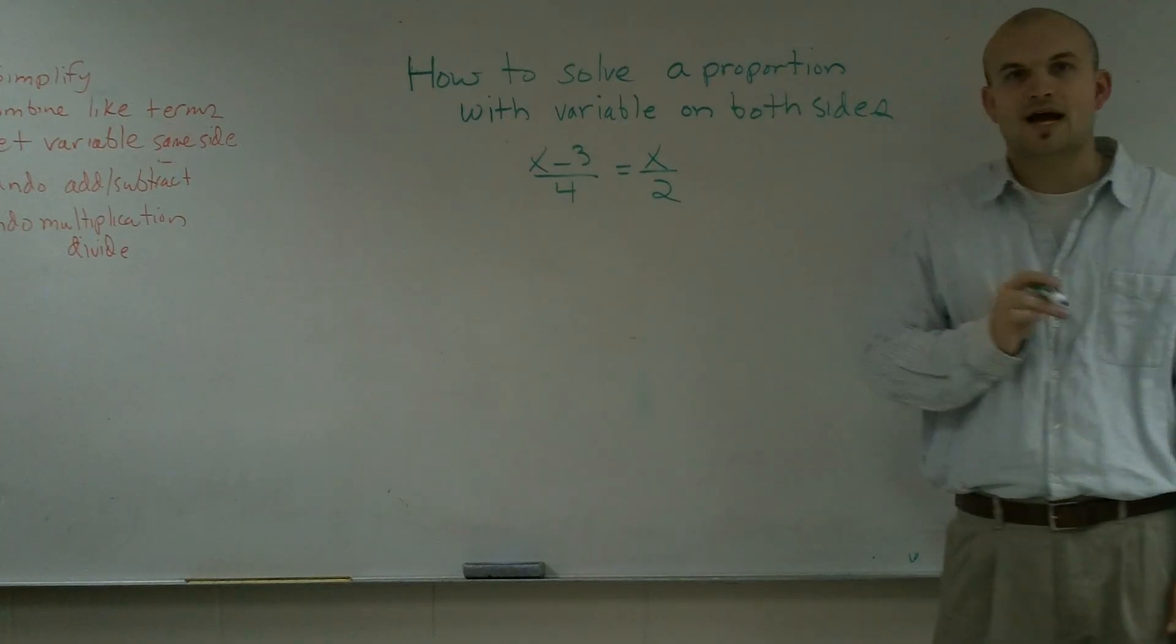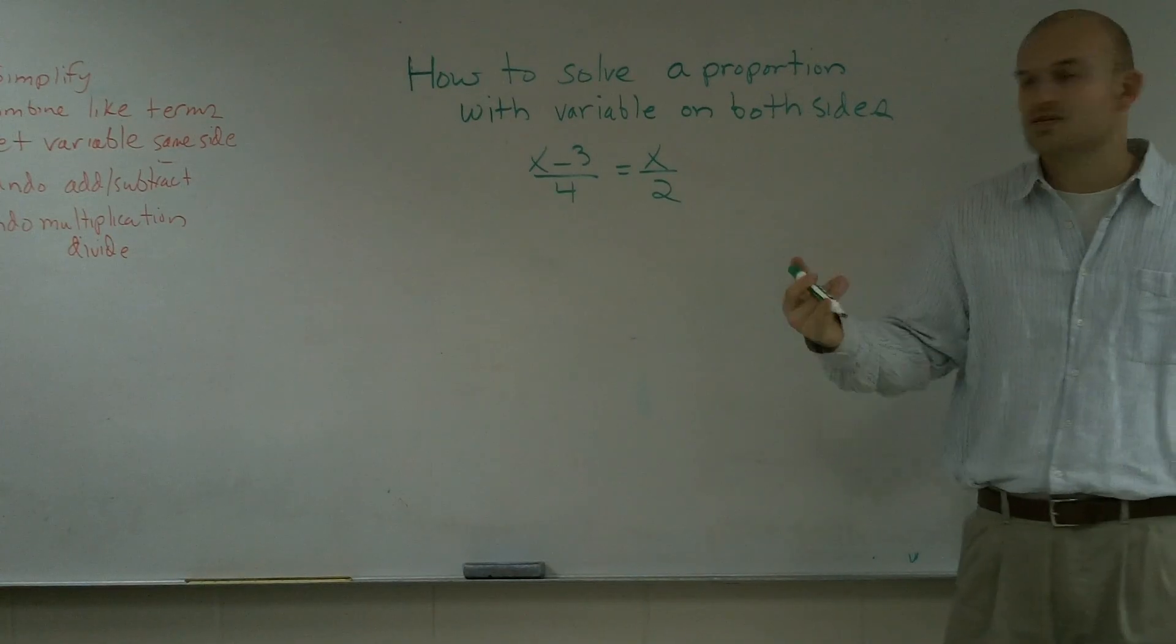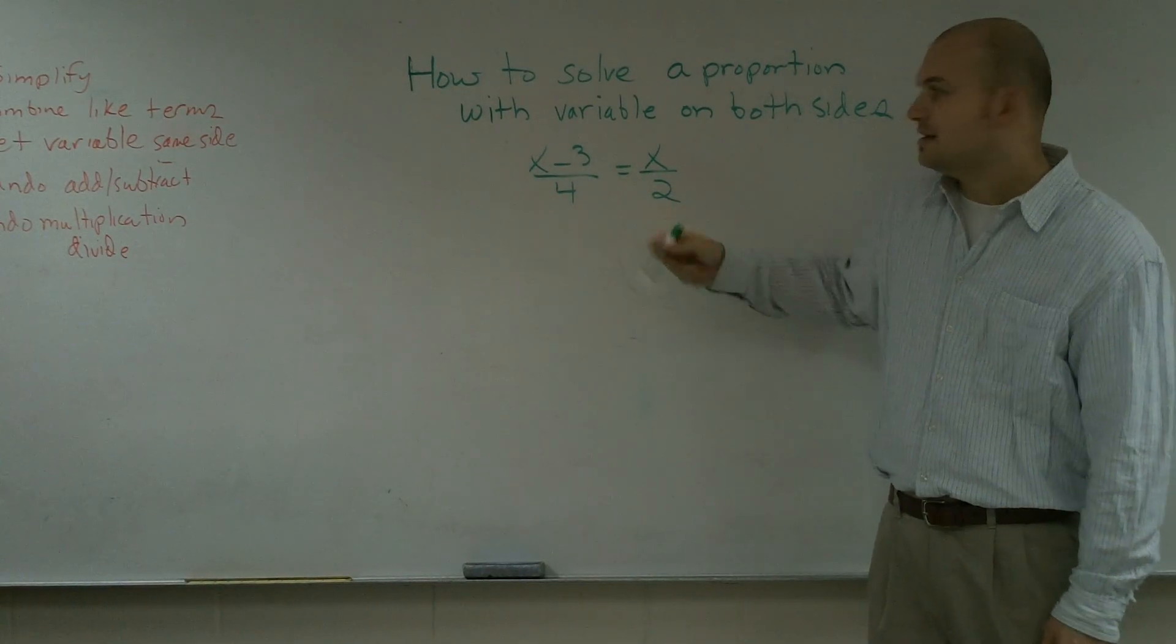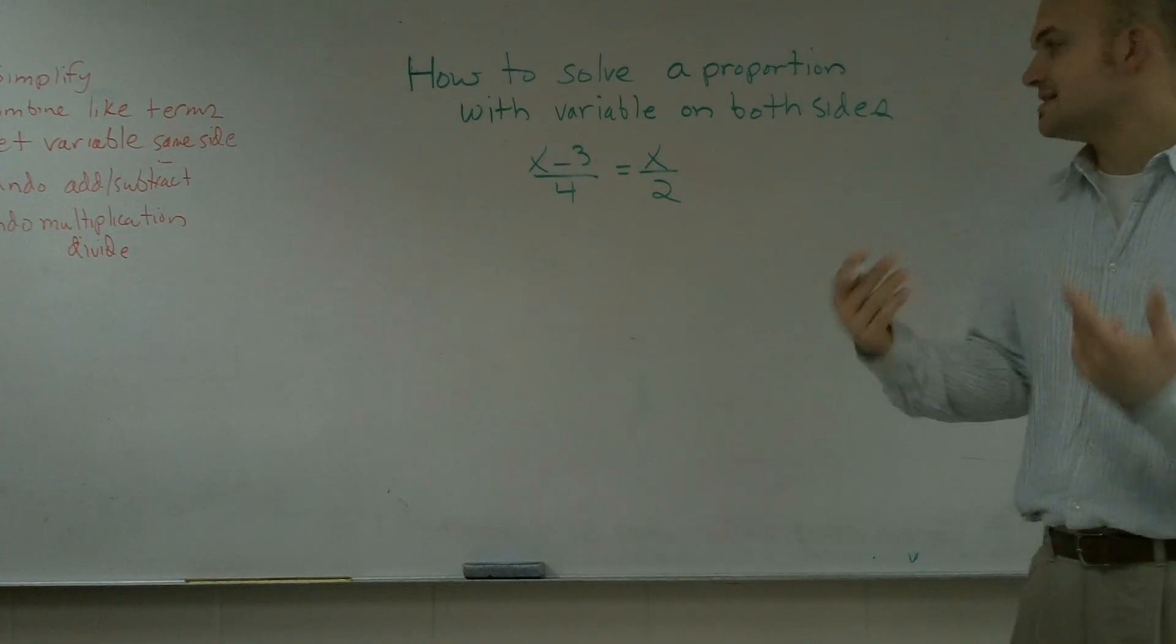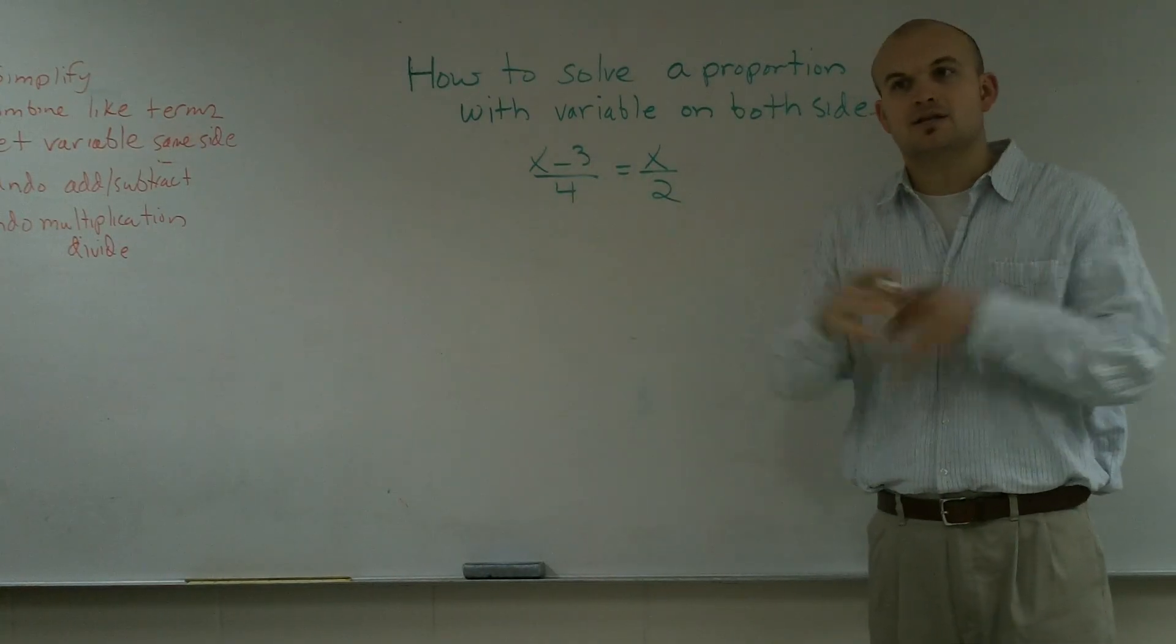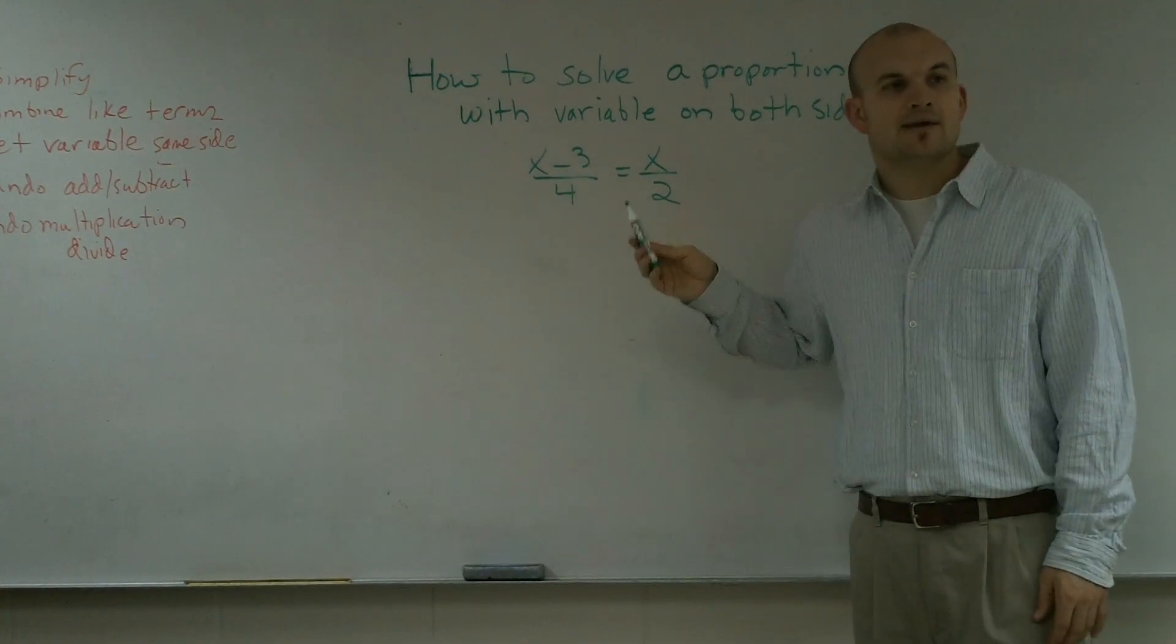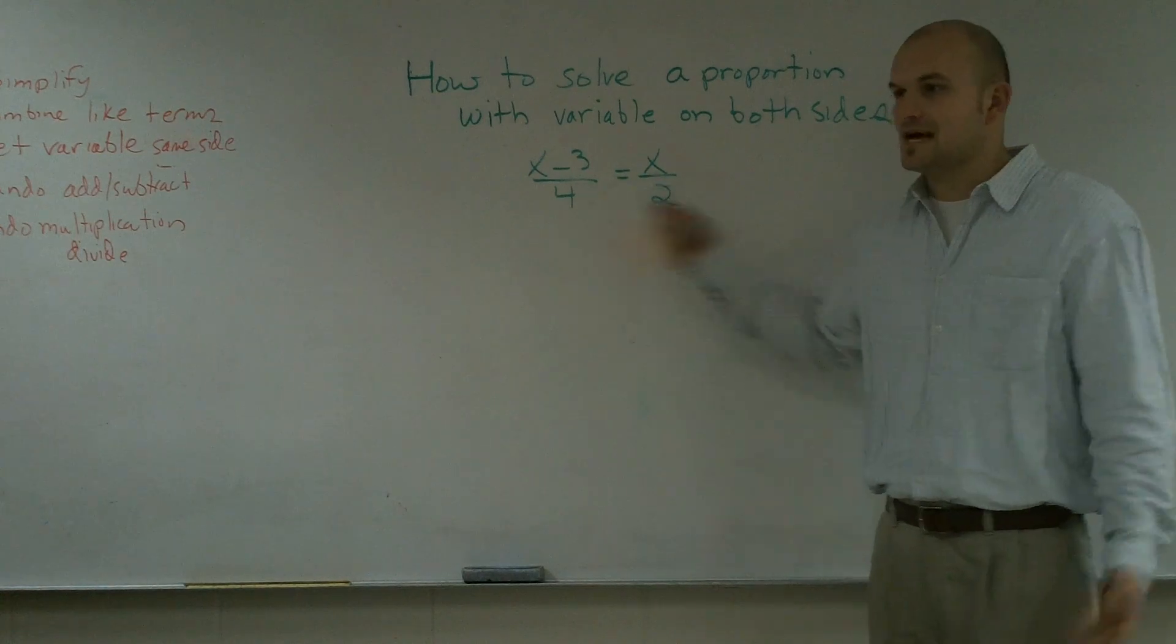When given rational fractions, the first thing I always look into is getting rid of our rational terms. So that means I want to get rid of what's on my denominator. Now, when you have the same denominator or just one fraction, it's easy to multiply by the denominator on both sides to eliminate it. However, when you have two terms with different denominators, you have to multiply by the least common multiple.